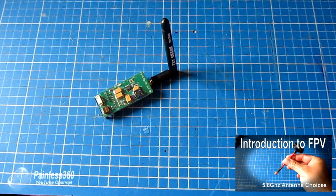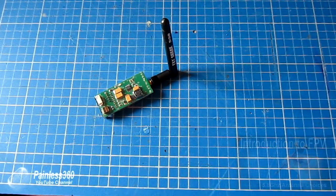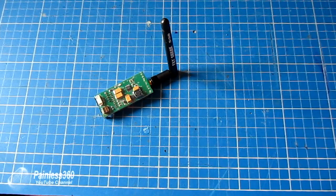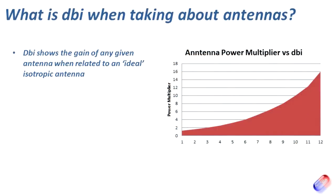Without further ado, let's talk about dBi. dBi is something you see alongside any antenna for FPV or transmission purposes. It's a logarithmic number, and it's actually the amount of gain that the antenna produces when compared to a standard isotropic antenna. An isotropic antenna can never really exist in the real world — think of it like a light bulb where every direction gets an equal amount of light. The closest real-world equivalent is the dipole or whip antenna, so think of that as the reference for dBi numbers.